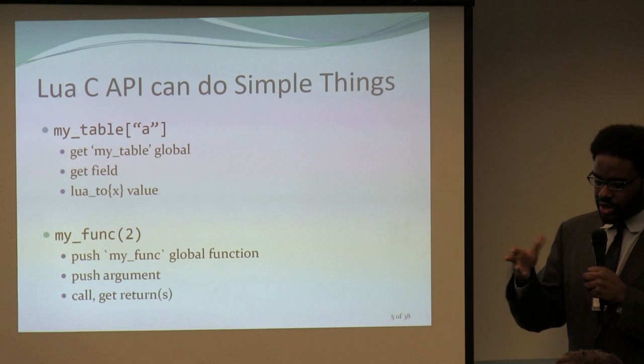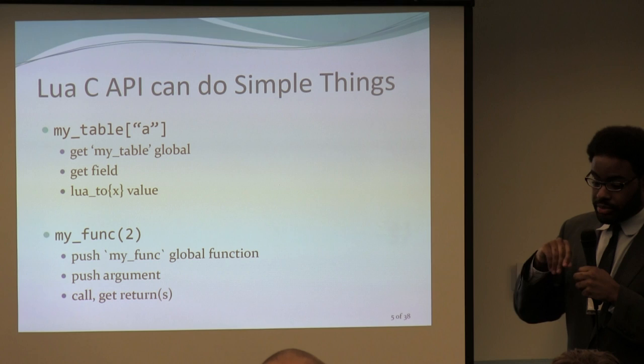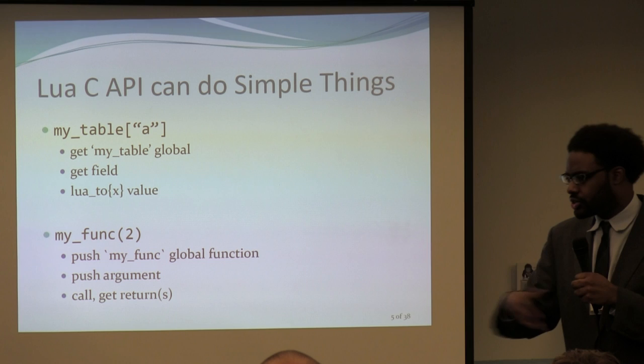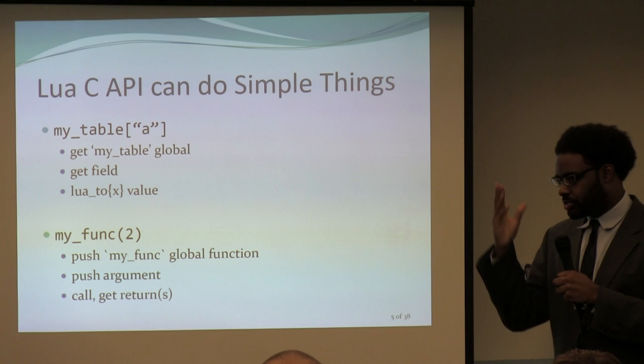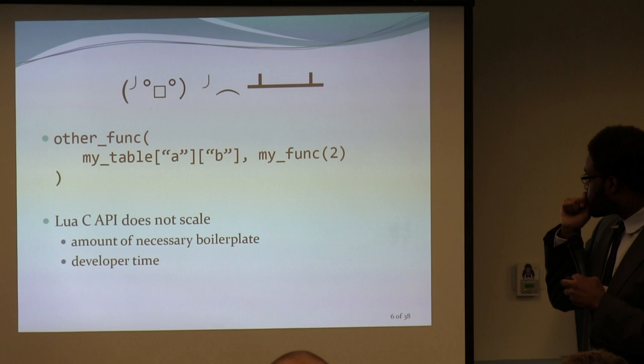Similarly, if you want to call some global function 'myfunc' with argument 2, you push the myfunc global function onto the stack, push the Lua C API arguments — in this case just 2 — then call it with lua_call or lua_pcall, get the return values back, use lua_tointeger or whatever, get the result from the function, and then pop the results and clean up the stack. Try doing that in the Lua C API and you'll be reduced to tears.